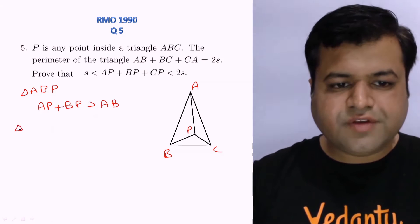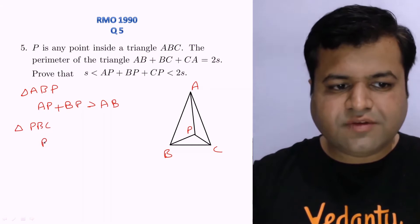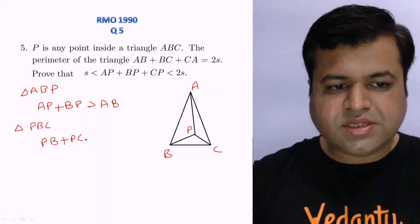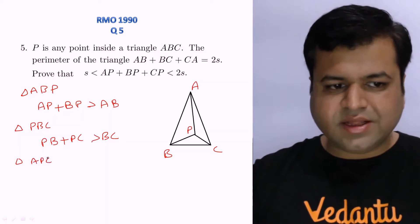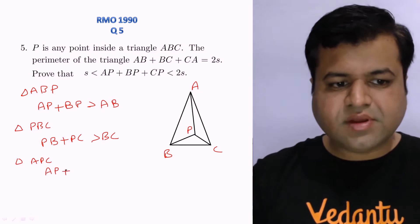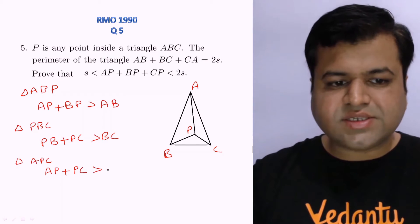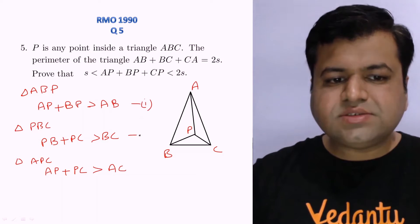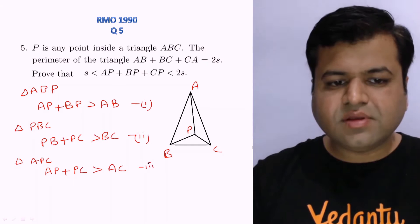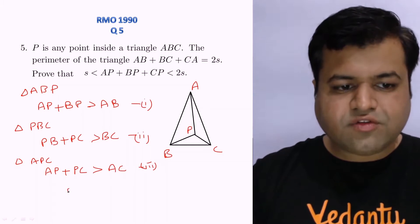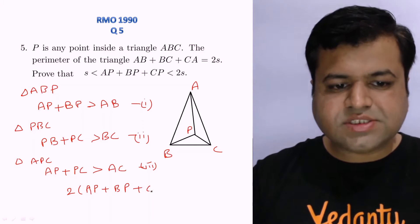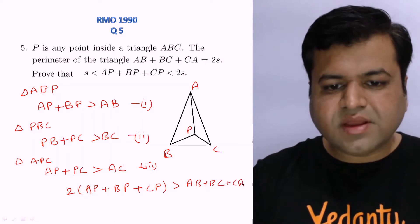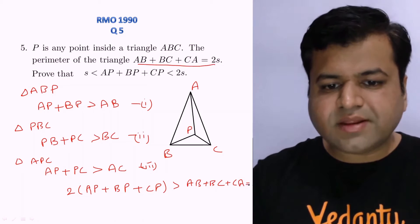Similarly, in triangle PBC, applying the same result we get PB + PC > BC. And in triangle APC, applying the same result we get AP + PC > AC. Now if you add up these three inequalities, you get twice of (AP + BP + CP) is greater than AB + BC + CA.